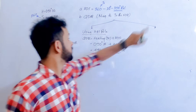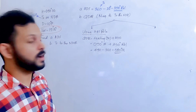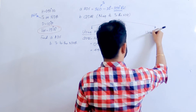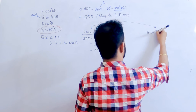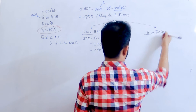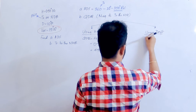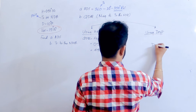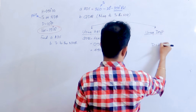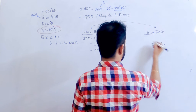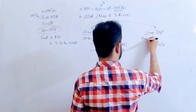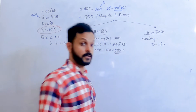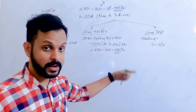The other method to find QDM is by using drift. What is the drift in the question? Drift is 10 degrees port, which means the track is 10 degrees port of the heading.